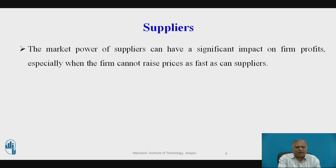The market power of suppliers can have a significant impact on firm profit, especially when the firm cannot raise prices as fast as suppliers can. The more suppliers a firm has, the greater control it can exercise over suppliers in terms of price, quality, and delivery schedules. For instance, manufacturers of laptop PCs work with multiple competing suppliers of key components such as keyboards, hard drives, and display screens.